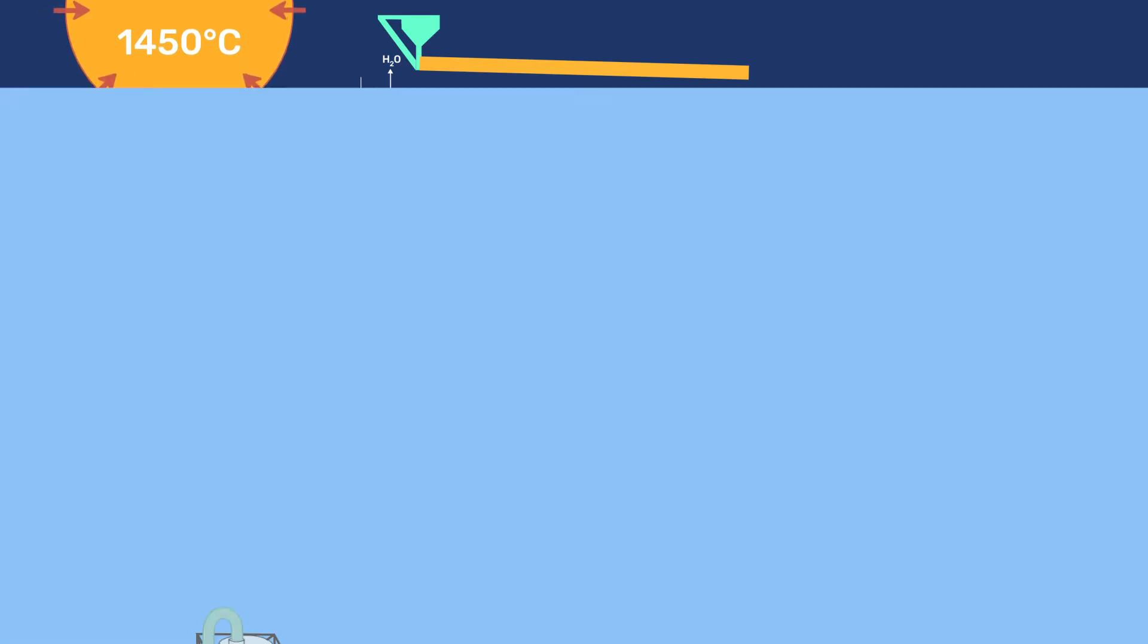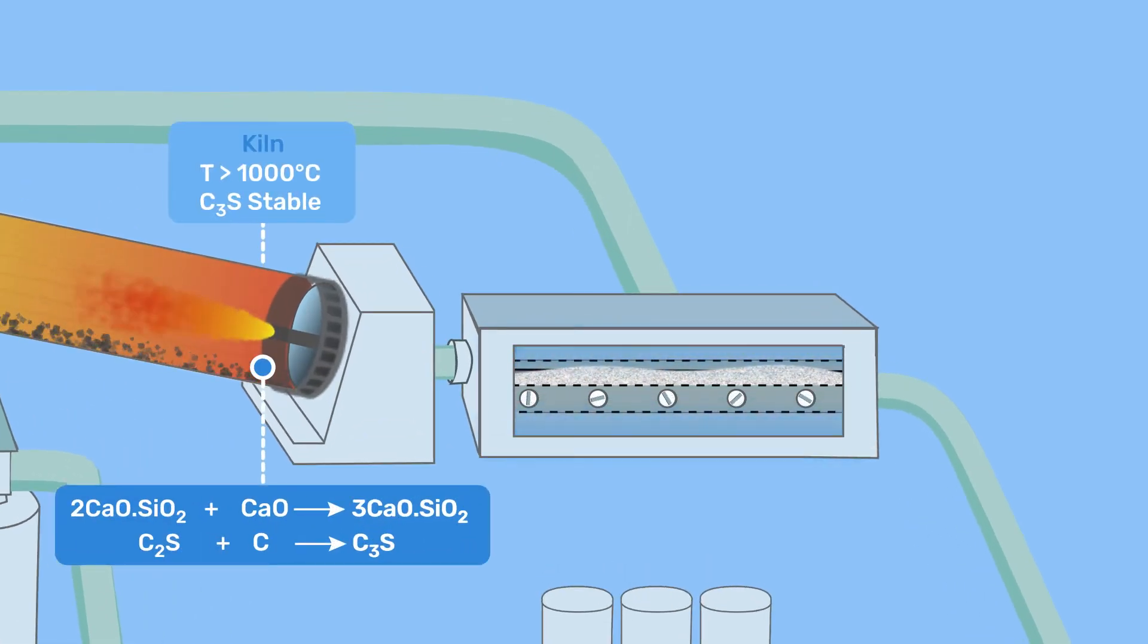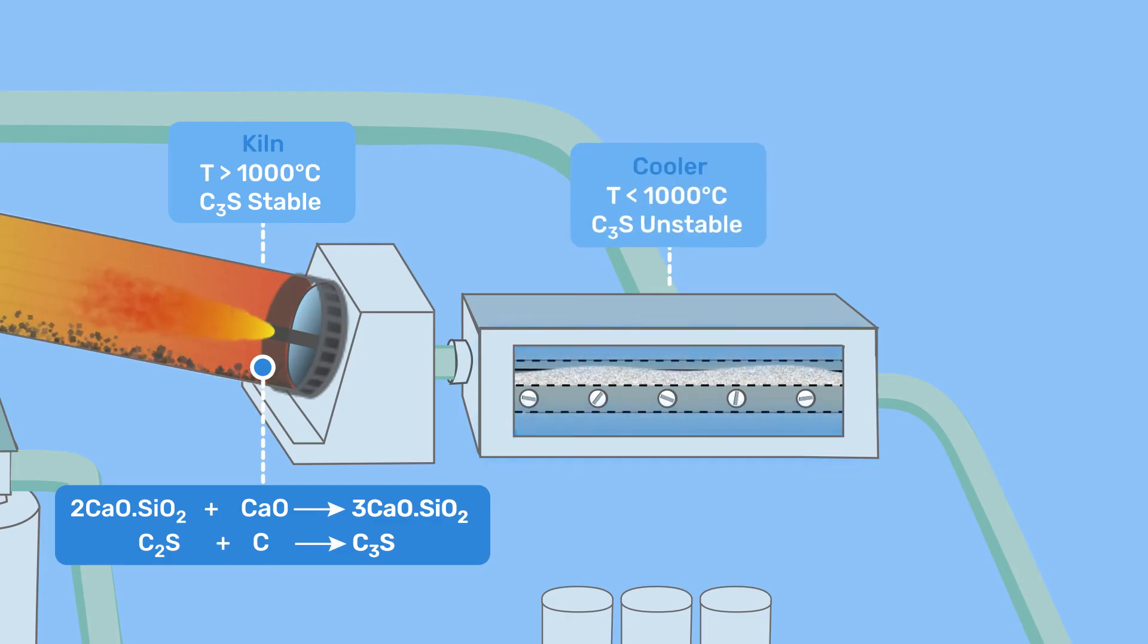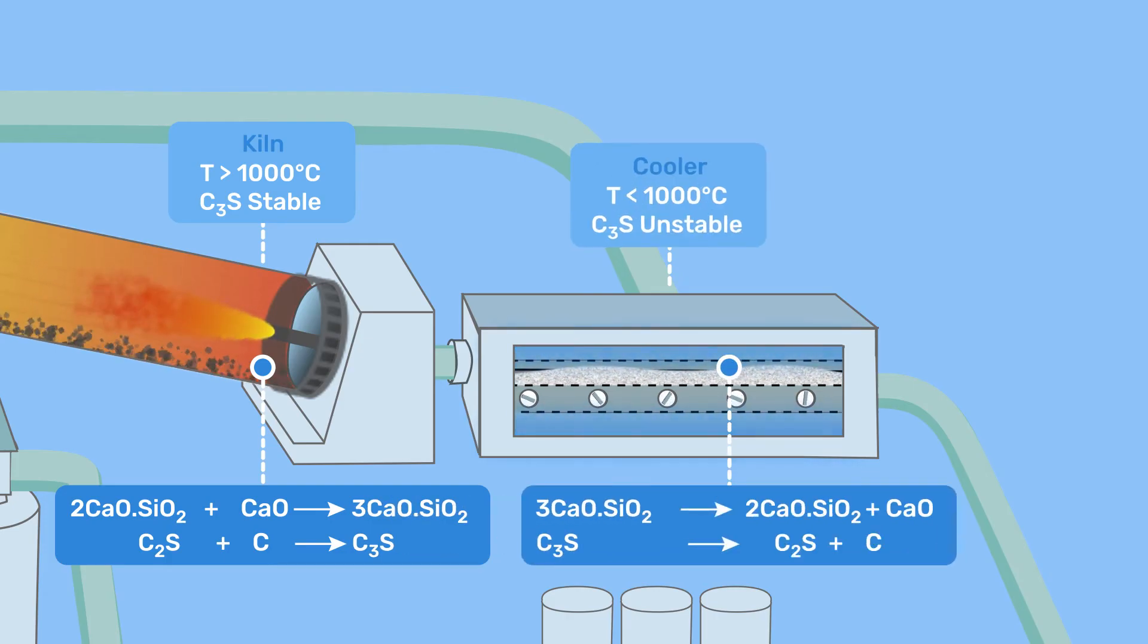At the kiln exit, clinker contains a lot of C3S, which is thermodynamically stable in the kiln, but unstable at ambient temperature. This is why it has to be rapidly cooled or quenched to avoid this tricalcium silicate from decomposing back to dicalcium silicate and calcium oxide.